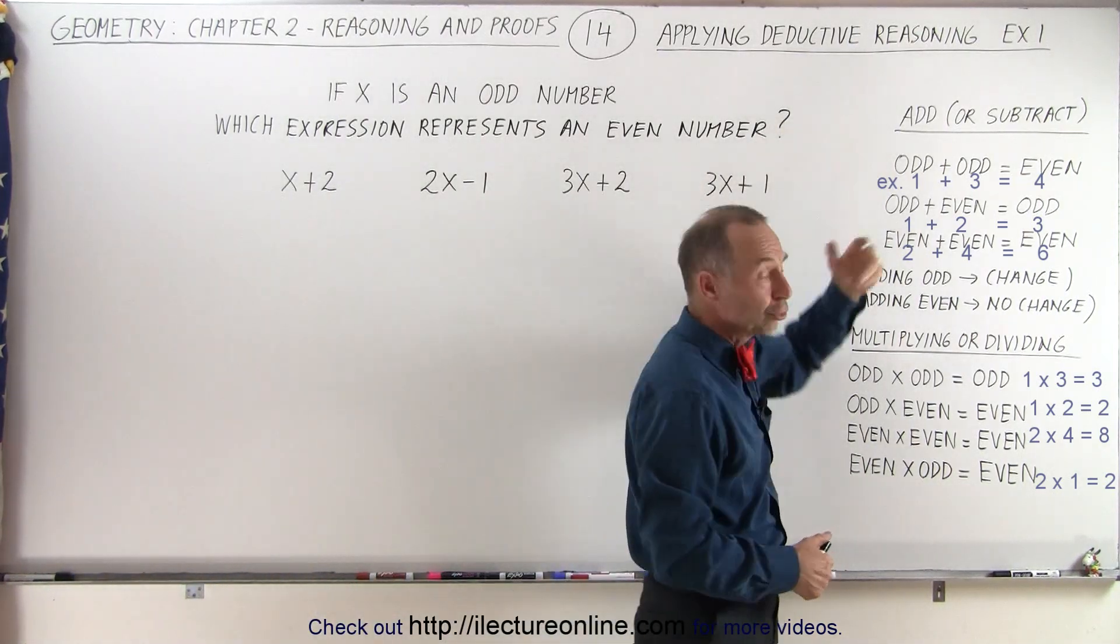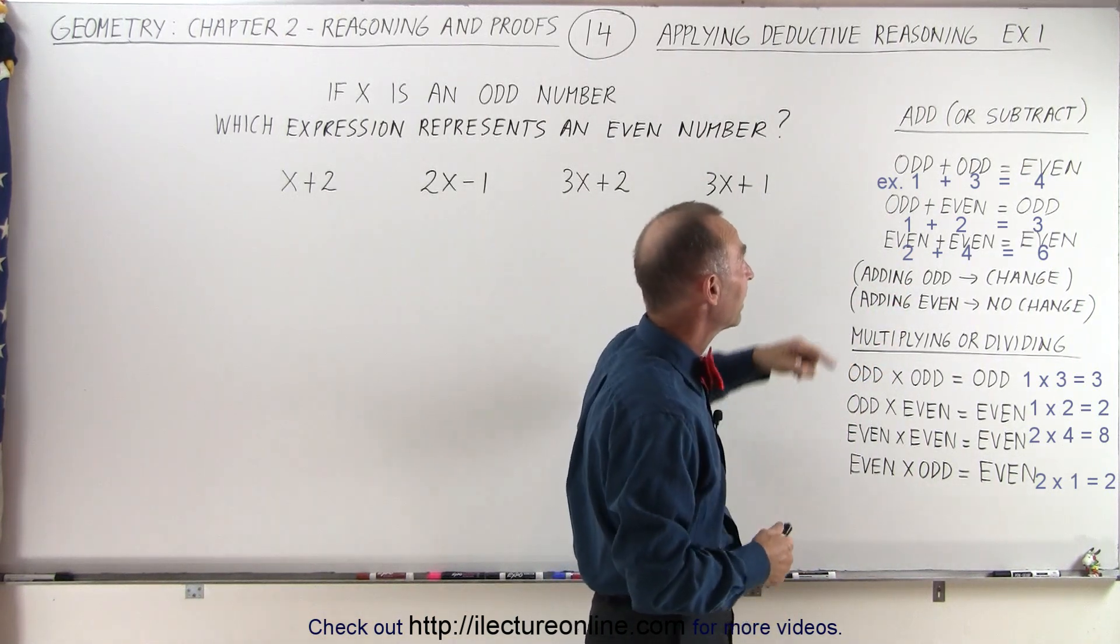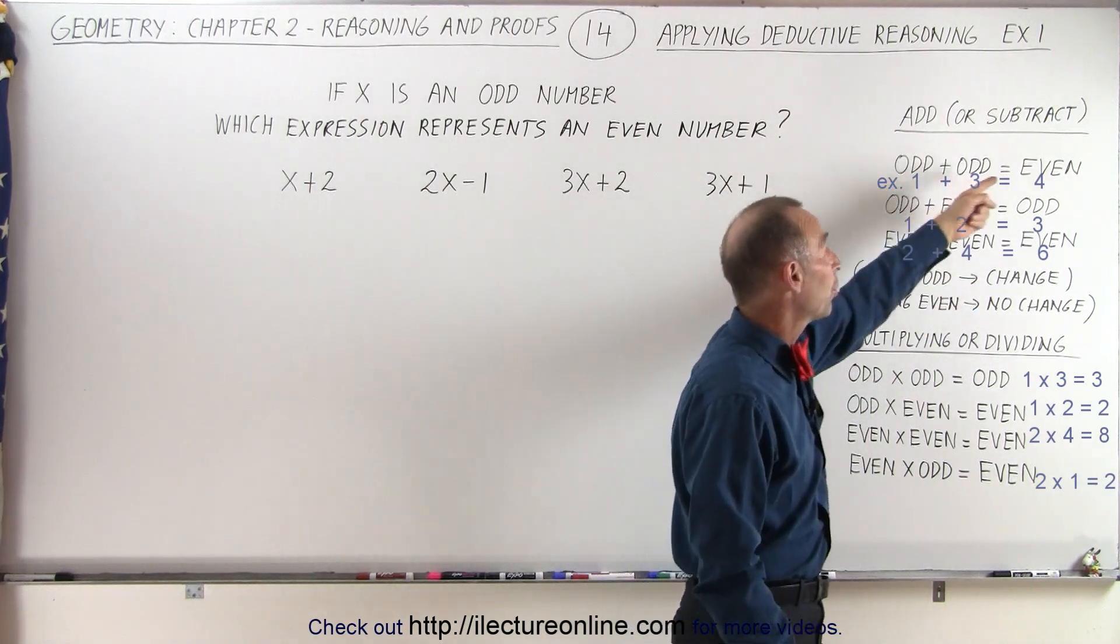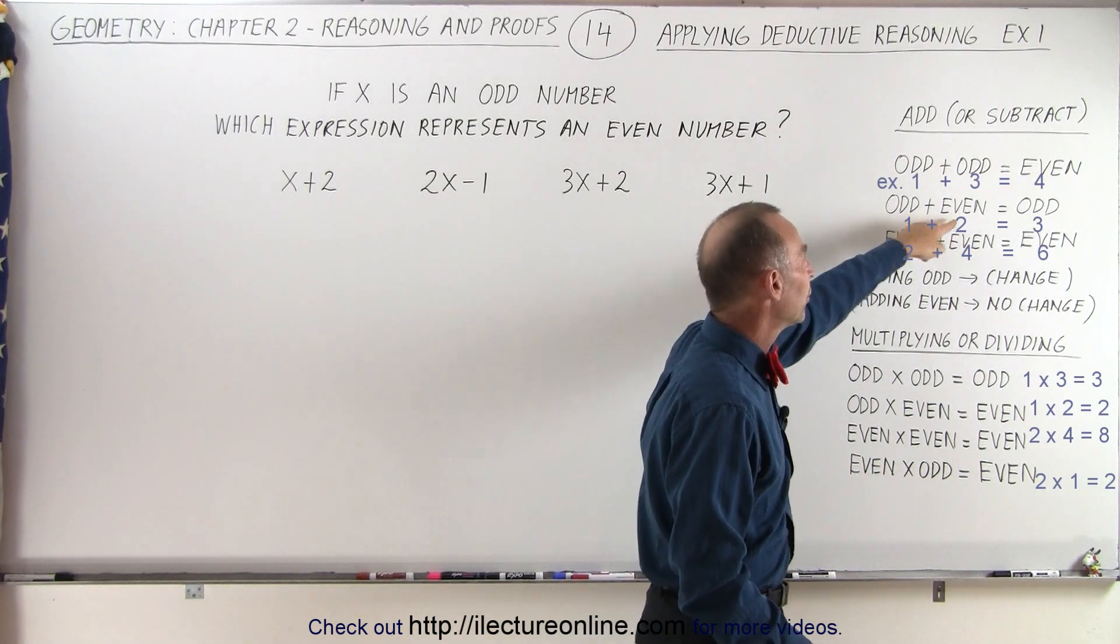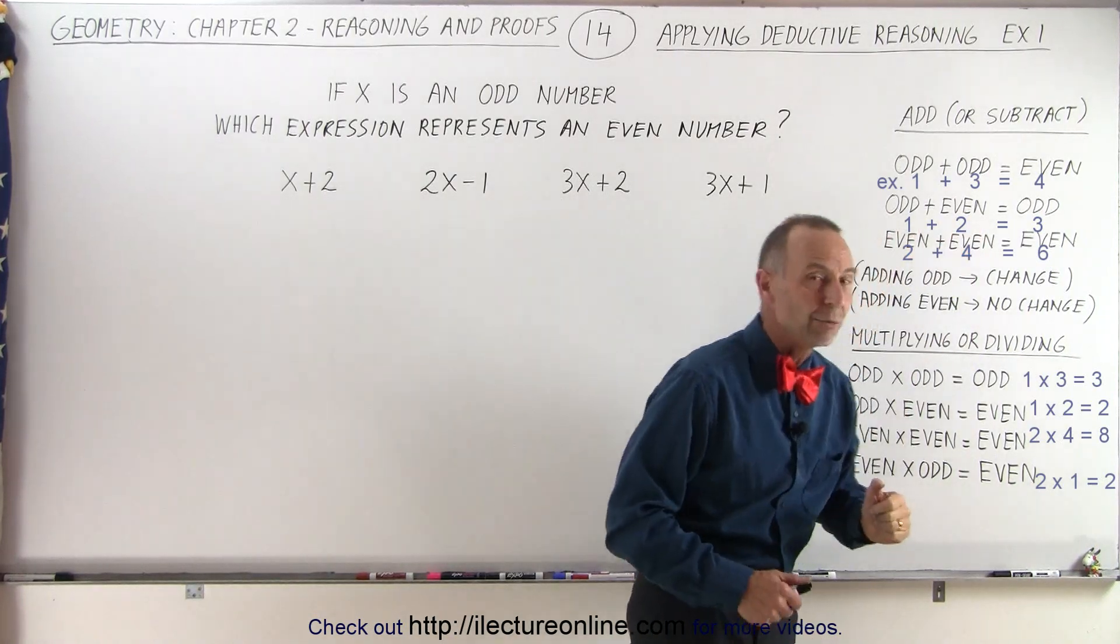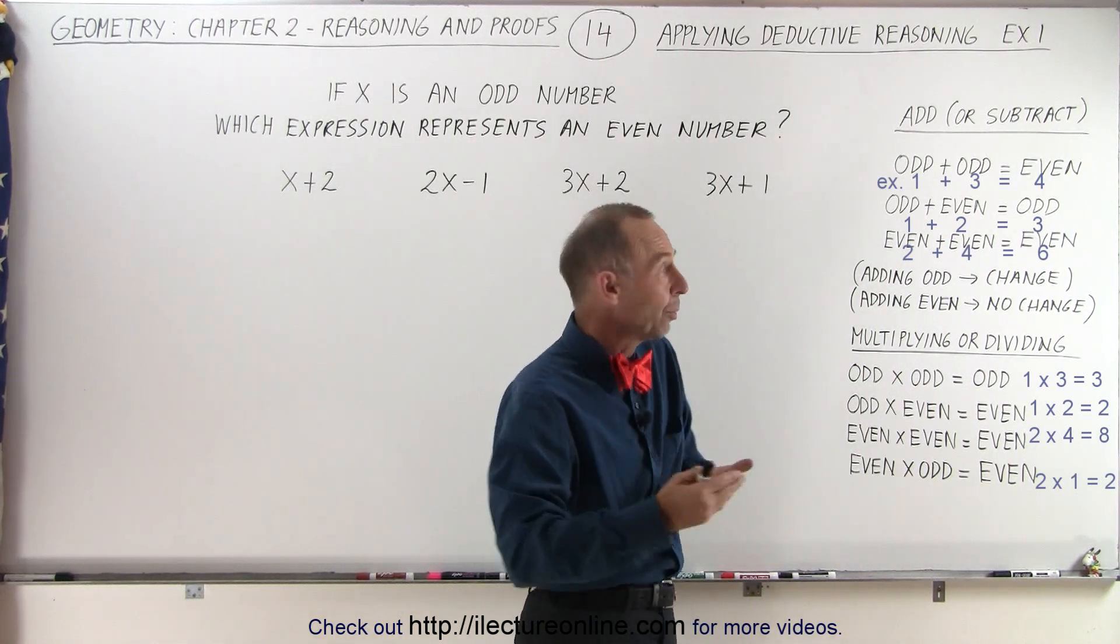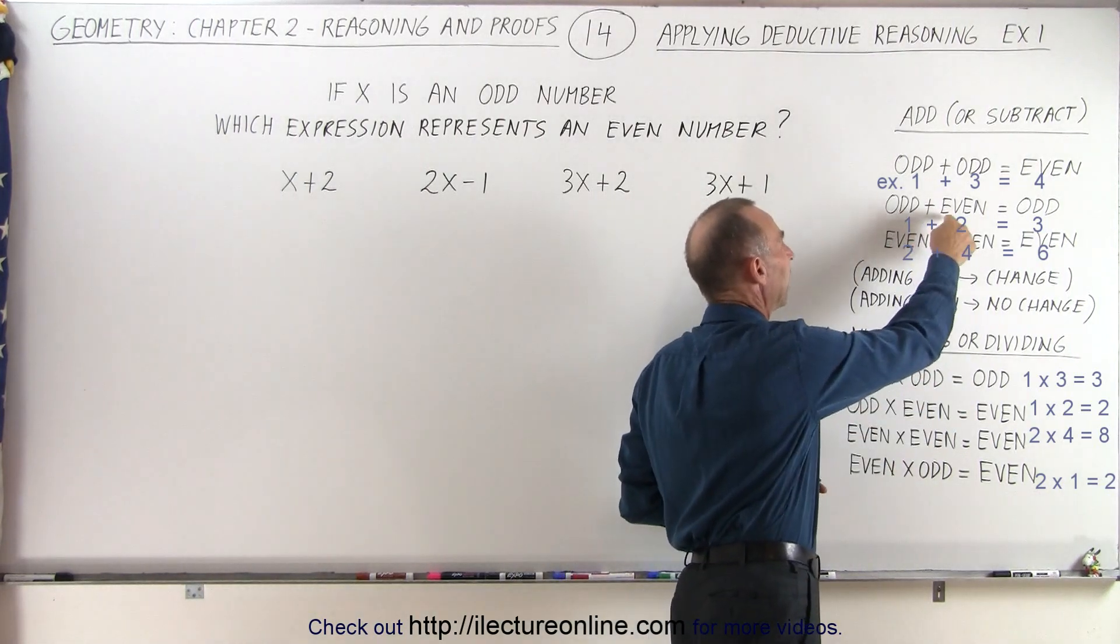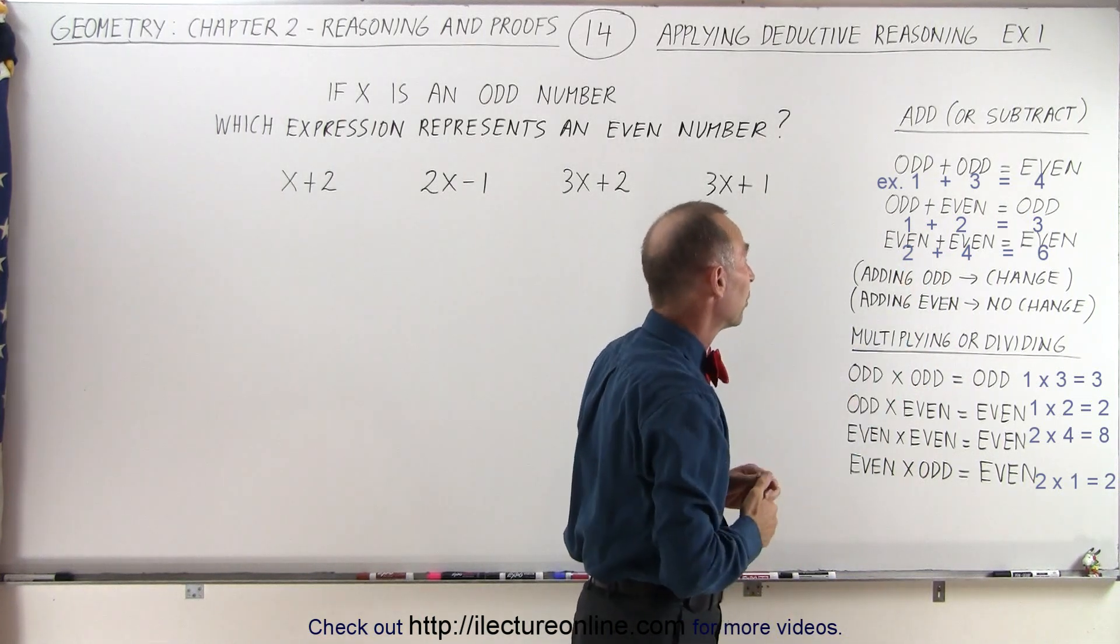If we add or subtract two numbers, the rules are exactly the same for adding or subtracting. If both numbers are odd and we add or subtract them, we will end up with an even number. If one of them is odd and the other one is even, the answer will still be odd. And if both of the numbers are even and we add or subtract them, we'll end up with an even result. So what we can see here is the only way that you're going to end up with an odd number when you add or subtract is when one number is odd and the other one is even. If they're both odd or they're both even, then you end up with an even number.